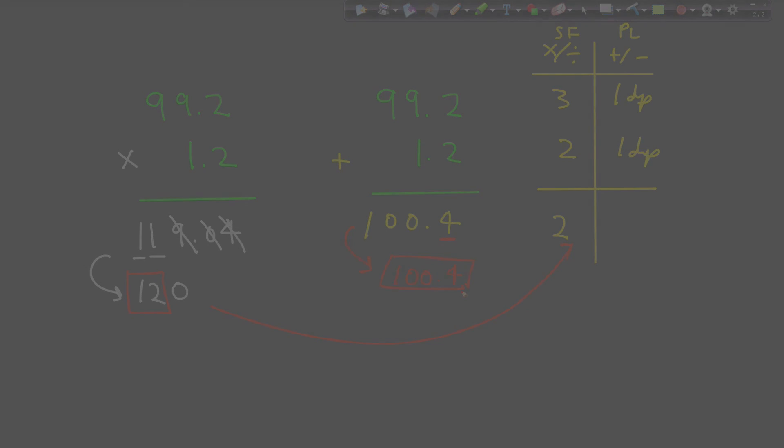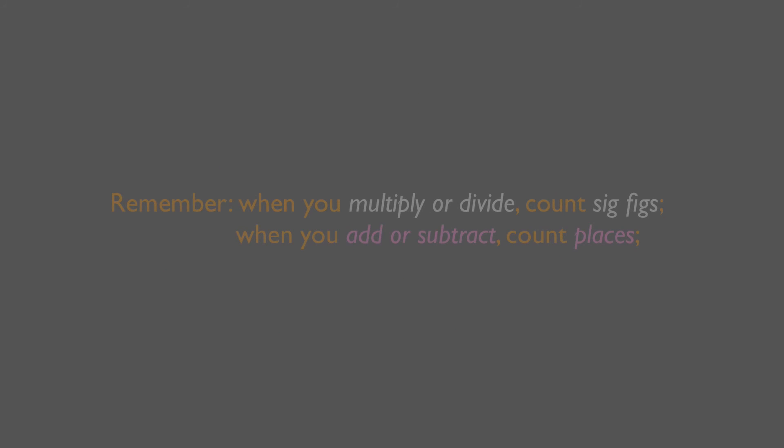I hope this helps you sort through the difficulties of doing mathematical operations. Remember, this is your key. If you're multiplying and dividing, count sig figs and forget about the places. On the other hand, if you're adding and subtracting, you only need to pay attention to the places and not to the sig figs.